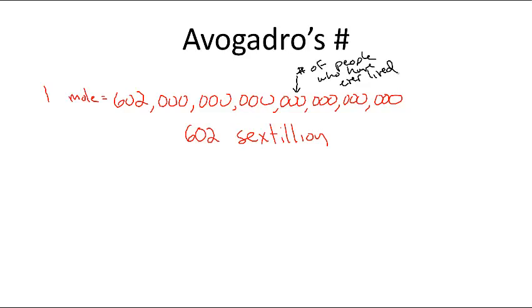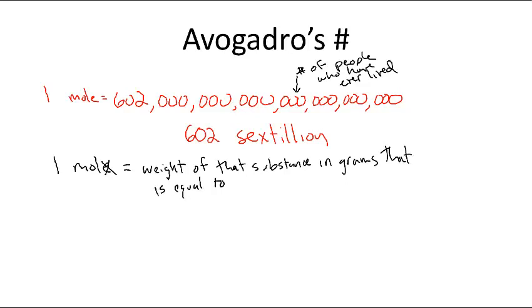because one mole of a substance is equal to, one mole of a substance equals the weight of that substance in grams, and that is equal to the atomic weight on the periodic table.